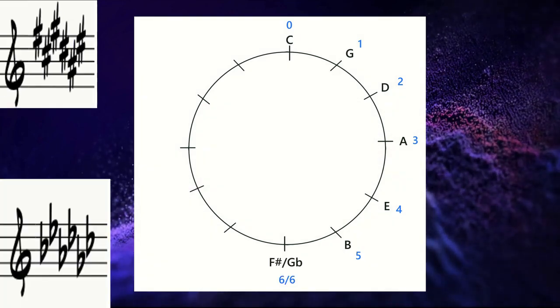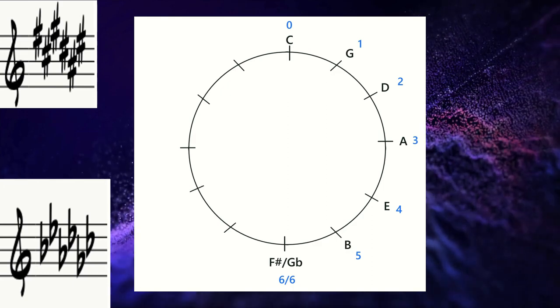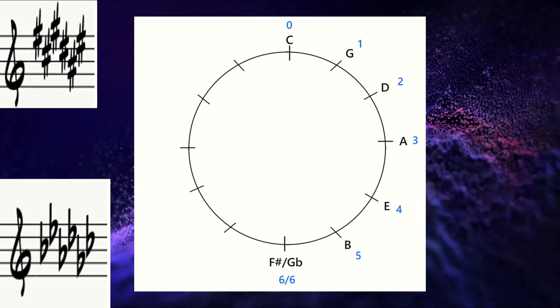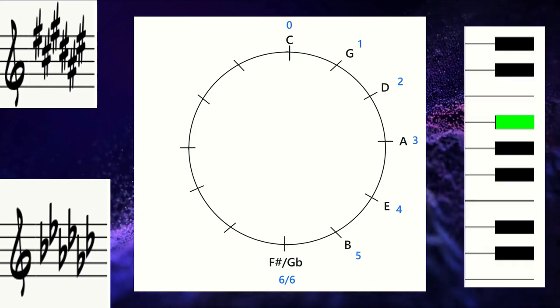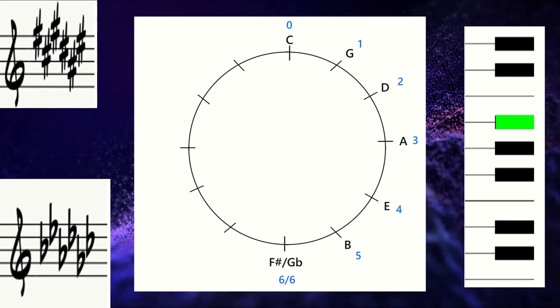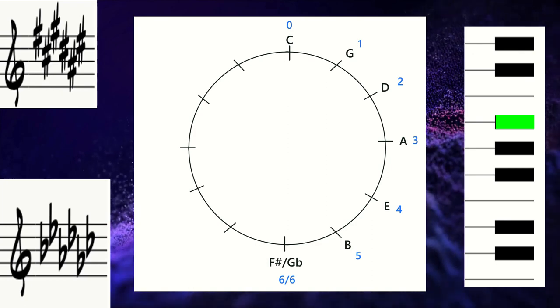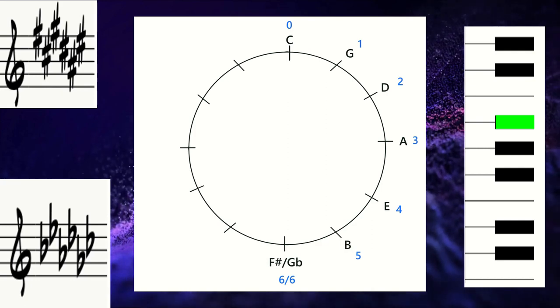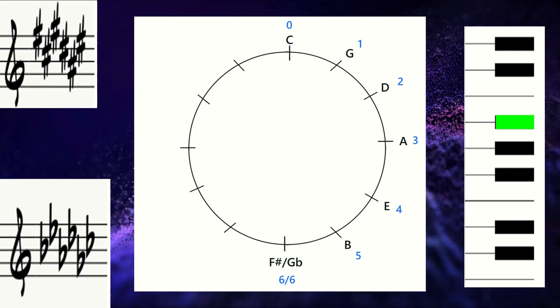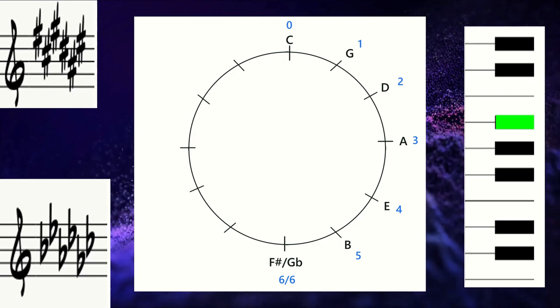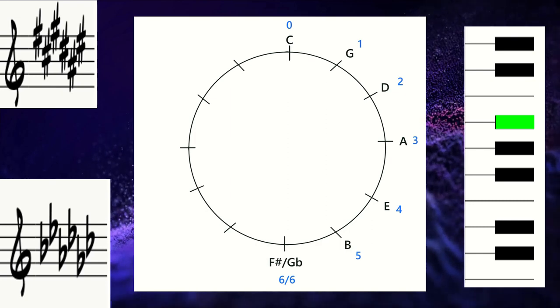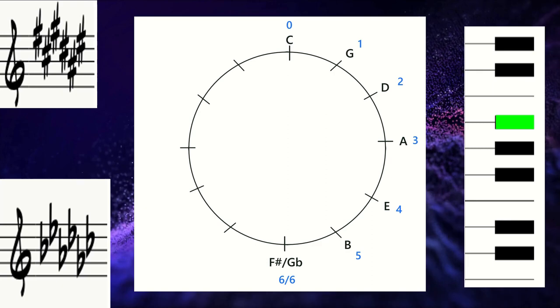Now we come to the bottom of our clock and things start to be a little different. For the first time our perfect fifth, seven half steps, has landed us on a black note, F sharp. And we are in a place where we are at six sharps. We need to make a decision here: do we continue on with sharps one more key or do we switch to flats? I prefer to switch to flats here. F sharp and G flat are the same notes.